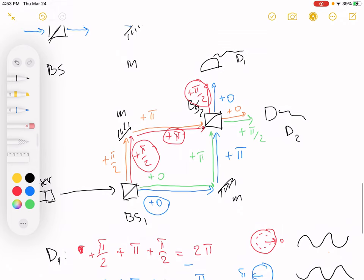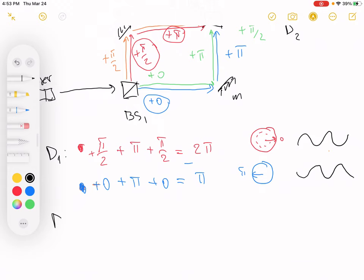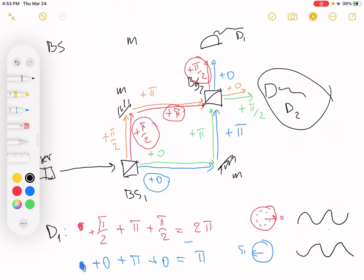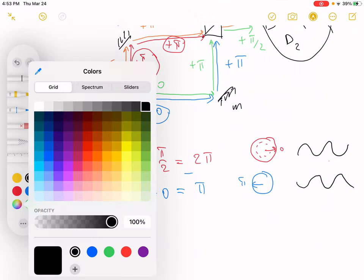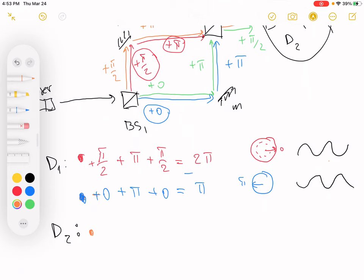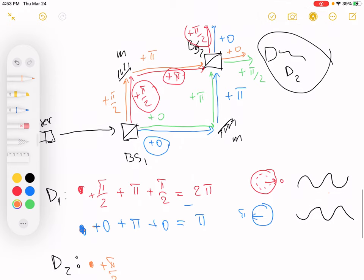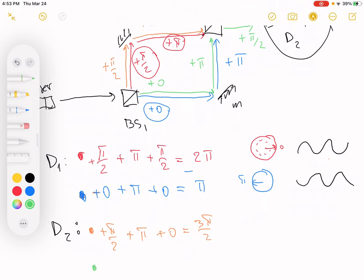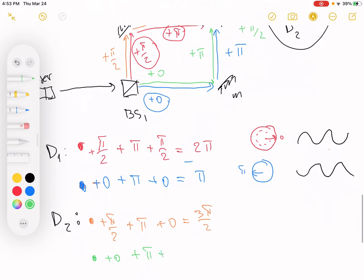Now let's examine the path that come to the detector two. Detector two. It's the orange and the green path. As detector number two you look at the colors orange and the green path. So let's start with orange. Orange path plus π/2. Green path plus π plus zero equals to 3π/2. Green path plus zero plus π and then got reflected plus π/2 equals to 3π/2.